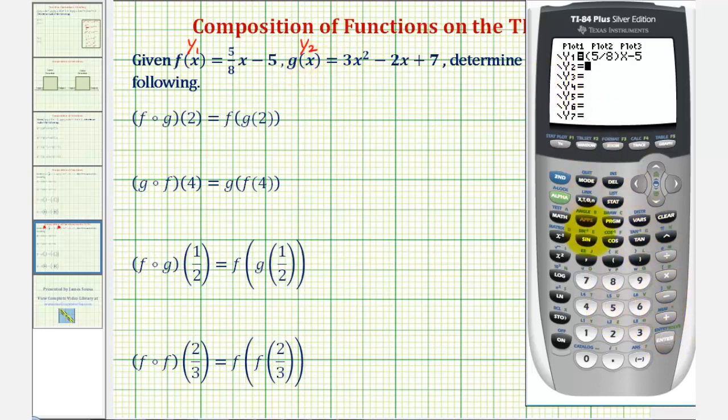And y sub two will be g of x, which is three x to the second, minus two x plus seven. Now we'll go back to the home screen by pressing second mode for quit.